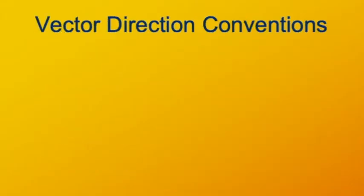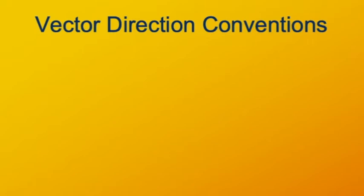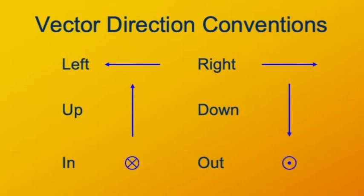Let's also review vector direction conventions for three dimensions. We know how to express vectors to the right, left, up, or down, but how do we draw an arrow coming at you or going away from you? A vector going away from you — into the screen — is shown as an X, representing the fletchings at the back of the arrow. A vector coming toward you is shown as a point inside a circle, representing the tip of the arrow.